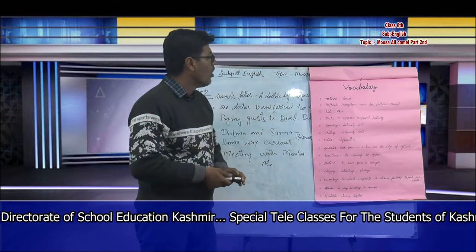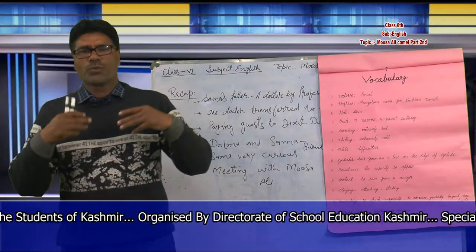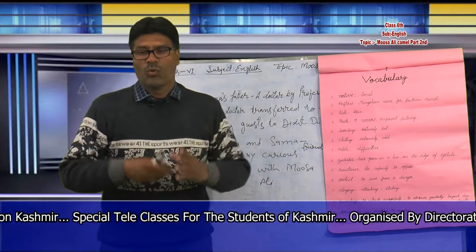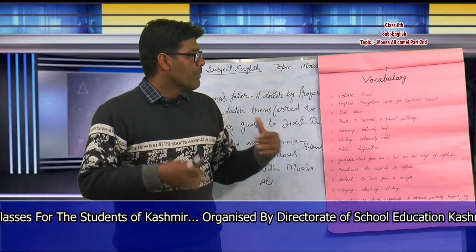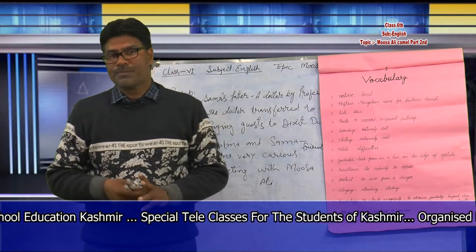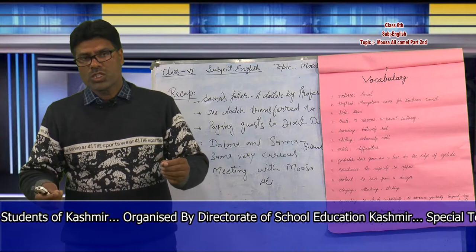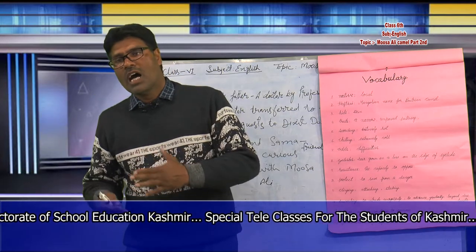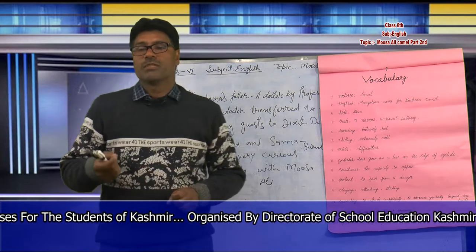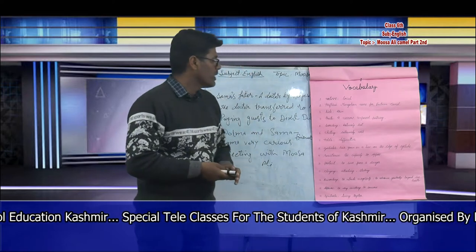The second word is 'Haftkai.' Although this word is not from English — it is from Mongolian — Haftkai is the Mongolian name for the Bactrian camel. The third word is 'hunting,' which we are mostly using as a verb, but in this lesson it has been used as a noun, and it is a synonym of sickening. The fourth word is 'trail' — be careful not to read it as 'trial.' The spelling is T-R-A-I-L, not T-R-I-A-L. Trails means a narrow, unpaved pathway — the paths in forests and jungles where few people walk.